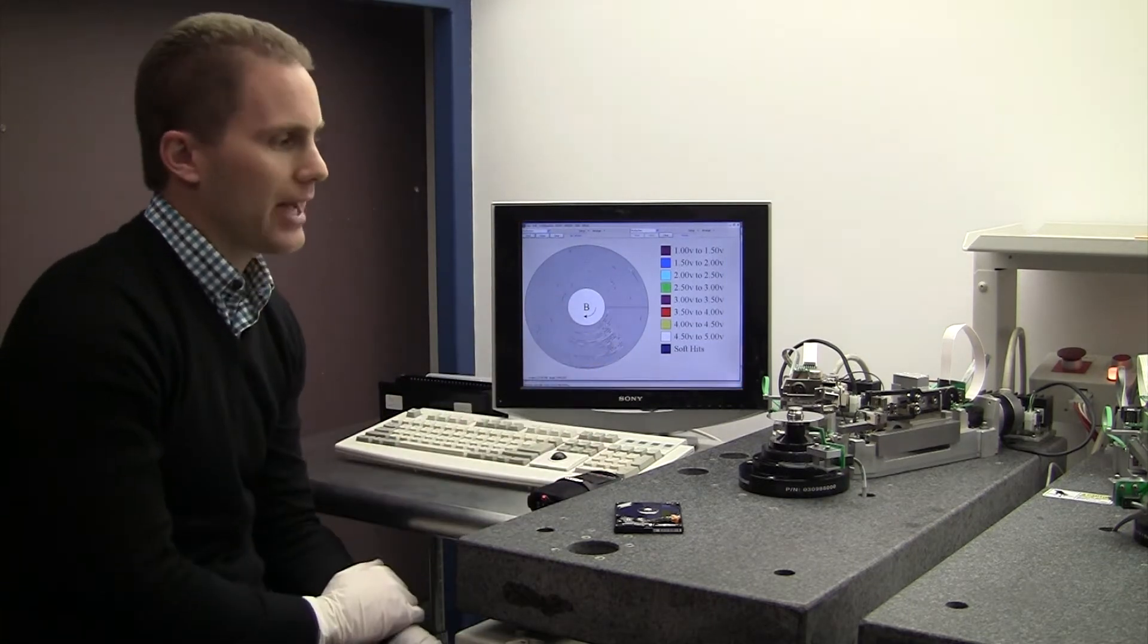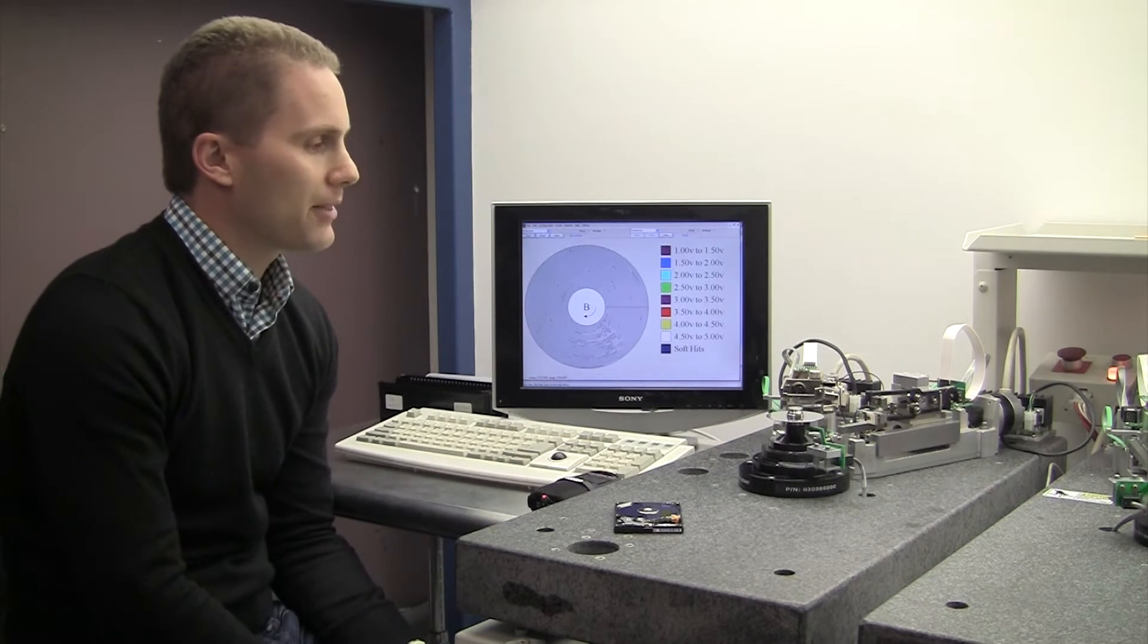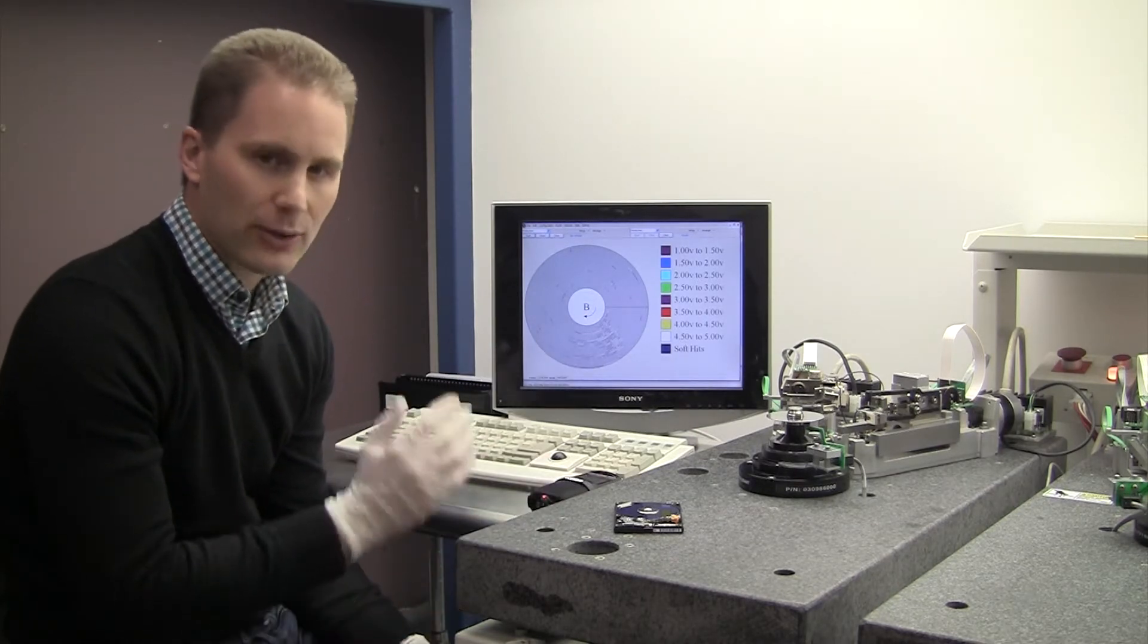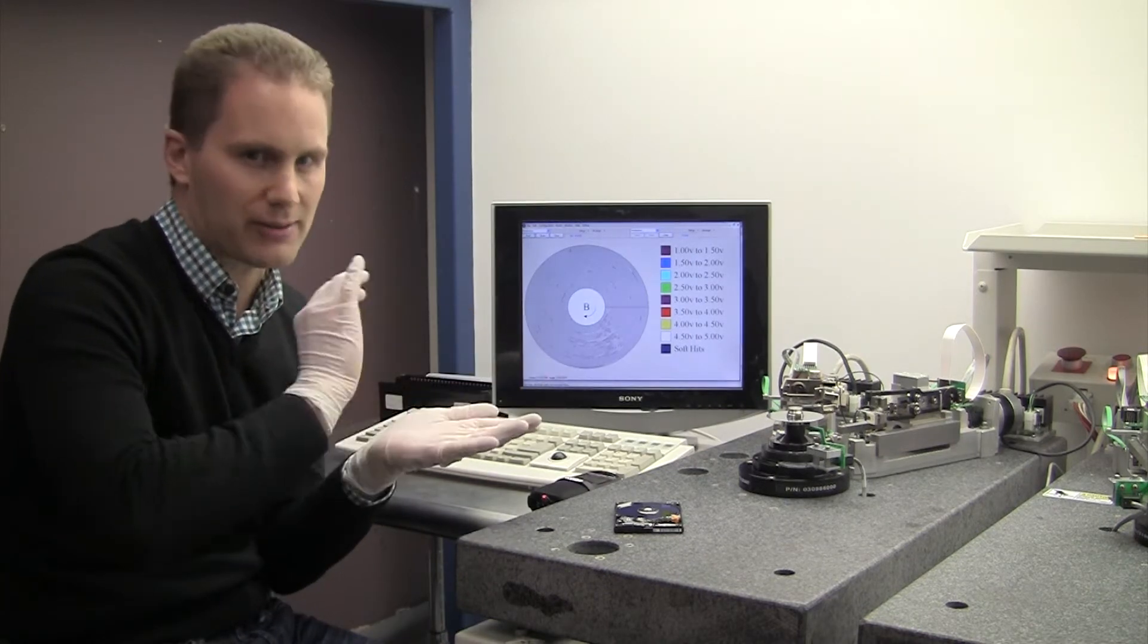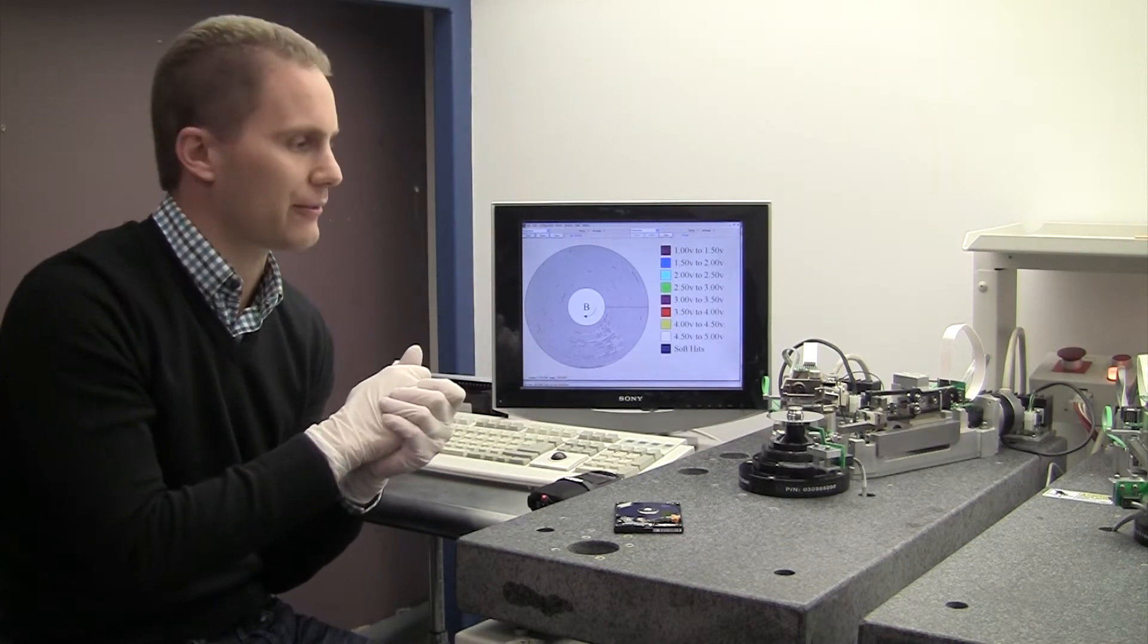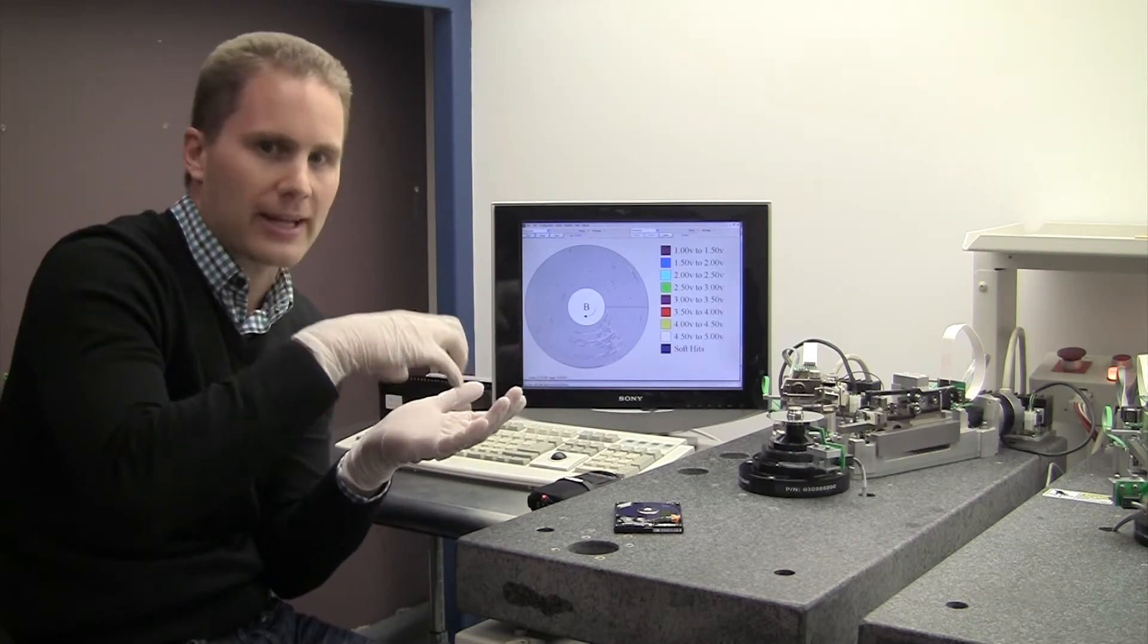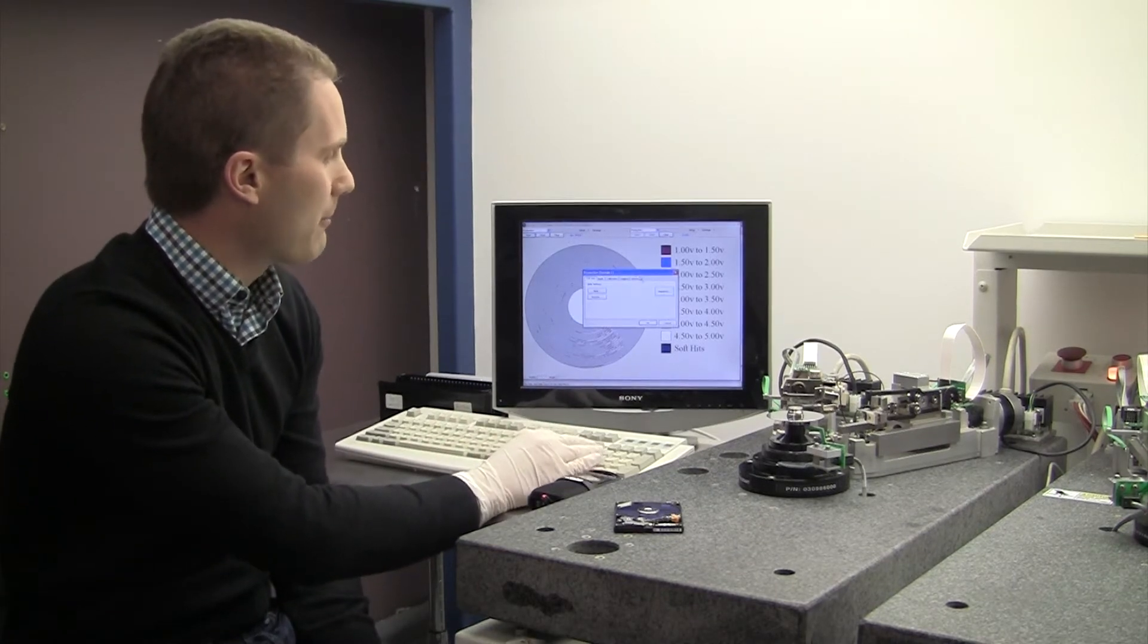All right. So the next thing I'm going to do now is to actually burnish the platter and try and clean it. The burnishing head, much like the head inside the hard drive, is not going to actually contact the surface. It's going to float just above the surface, maybe a couple nanometers above the surface, and essentially shear off any dirt or embedded particles in the platter.